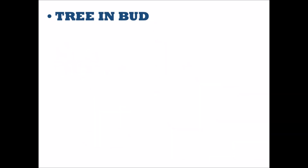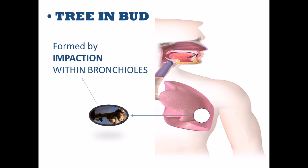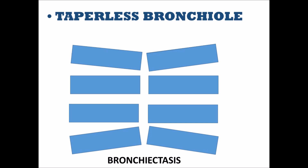Tree-in-bud appearance: a bronchiectatic lung can also show a non-specific sign called tree-in-bud appearance, where narrow branch-like structures often end in a nodular form. These are formed by impaction within bronchioles. Taperless bronchioles: normally, bronchioles taper as they progress towards the periphery, but in bronchiectasis they remain dilated till the end.